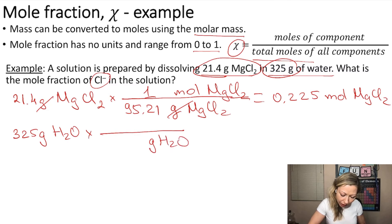Again, grams of H2O on the bottom, moles of H2O on the top, and in one mole of H2O, we have 18.01 grams. If you do this calculation, you get 18.05 moles of H2O.